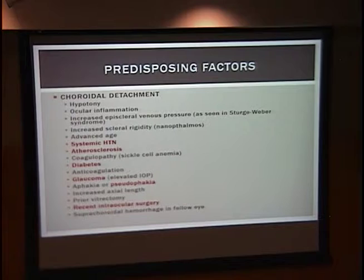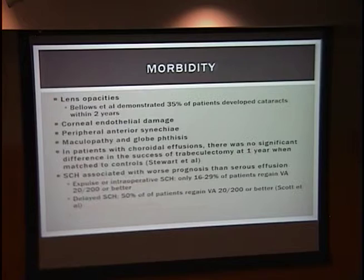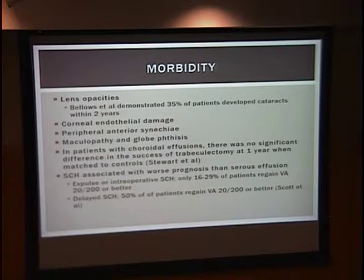Predisposing factors include systemic diseases that injure vessels, glaucoma, and recent intraocular surgery — the biggest factor for our patient. Morbidities include lens opacities in a significant proportion of patients, corneal endothelial damage especially with iris-to-cornea or lens-to-cornea touch, peripheral anterior synechiae, maculopathy, and globe phthisis. Interestingly, one study found that trabeculectomy success was not affected by the choroidal detachment.